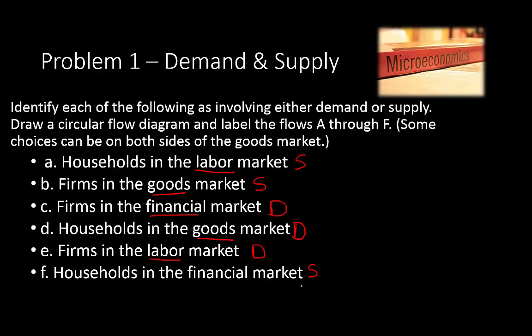E: firms in the labor market — firms are demanding labor from households or individuals. F: households in the financial market — in this case we'll say supply. It could be either demand or supply. Households are suppliers when they invest or save their money for retirement. They demand when they get a loan from the bank to buy a car or get a mortgage for a house.